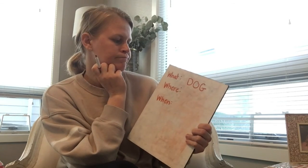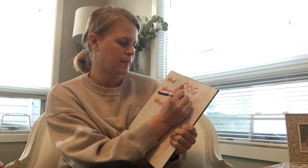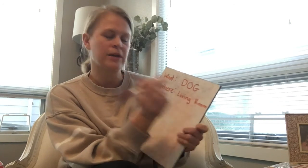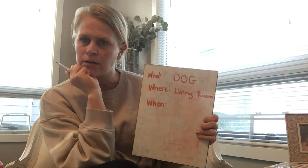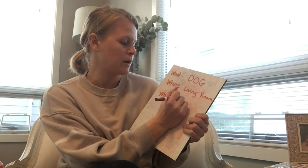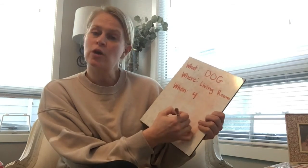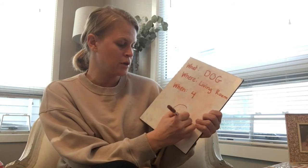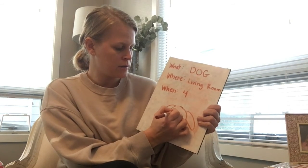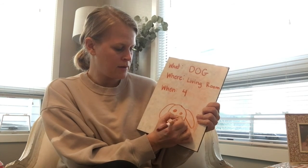Where is the party going to be? It's going to be in my living room. Maybe you want to have it in your bedroom, kitchen, or backyard — it could be lots of different places. You get to decide what time. I'm going to have my party at four o'clock. And then maybe you want to draw a picture — I'm going to draw a picture of a dog so people know to come to my dog party.